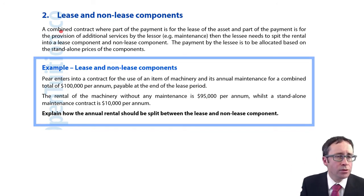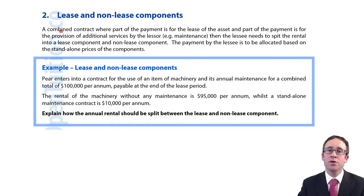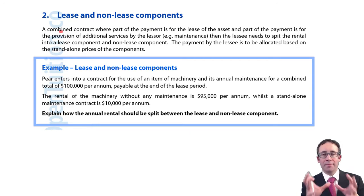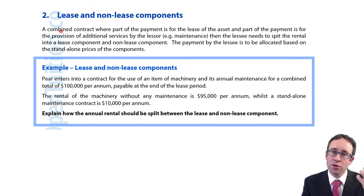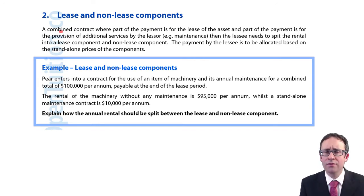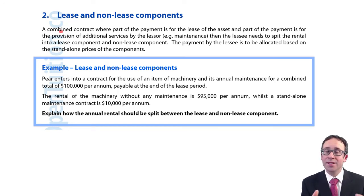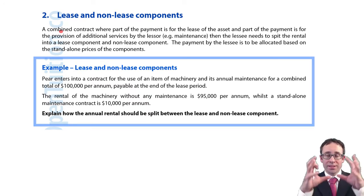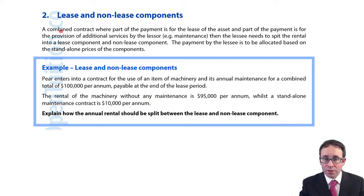Other examples: taking it away from buildings, you could make a lease payment for the use of plant and machinery — one big payment where part is for the use of the asset and the other part is for maybe the maintenance or repairs of that plant and machinery. So we'll need to take the total payment and split it in two.